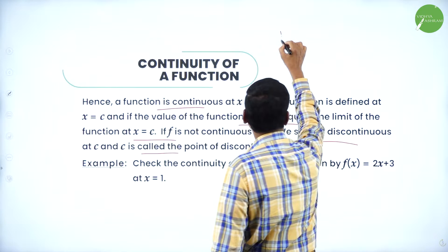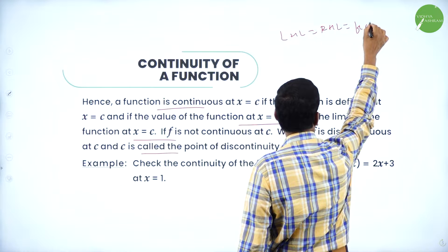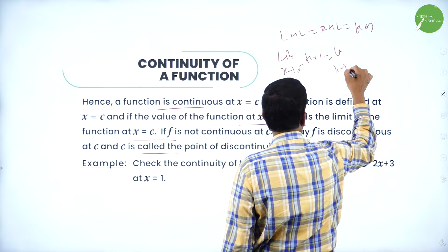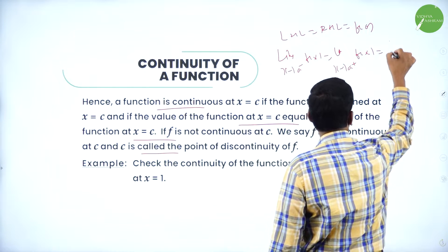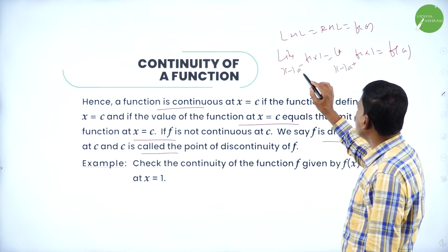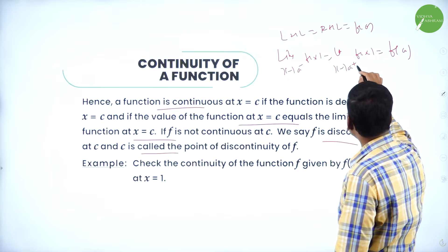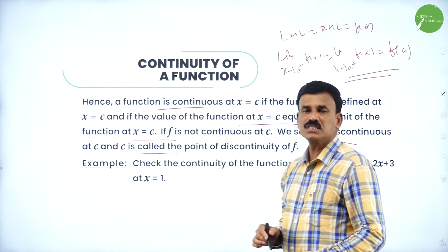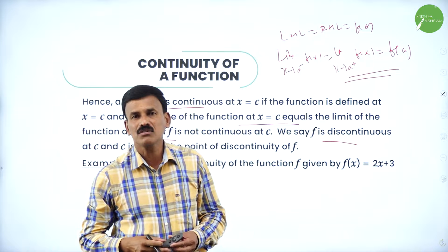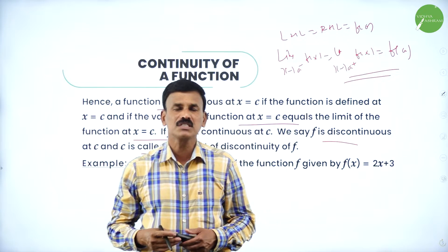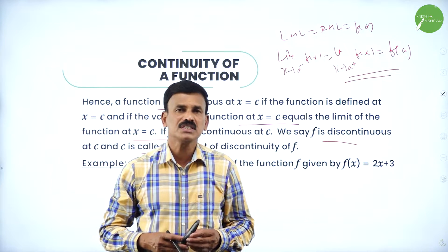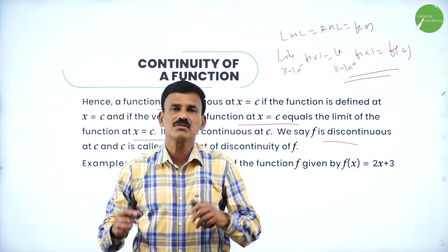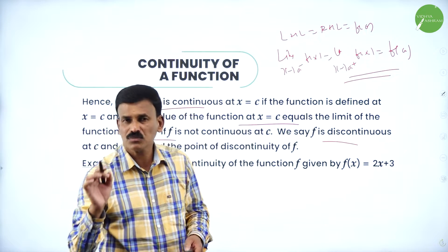Therefore, if left hand limit = right hand limit = functional value, the function is continuous. That is: limit as x→a⁻ of f(x) = limit as x→a⁺ of f(x) = f(a). If these three are equal the function is continuous; if not equal, it is called a discontinuous function. To verify continuity, simply check the left hand limit, right hand limit, and functional value — if all three are equal, the function is continuous.